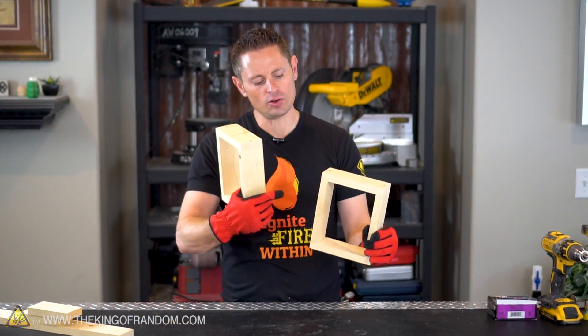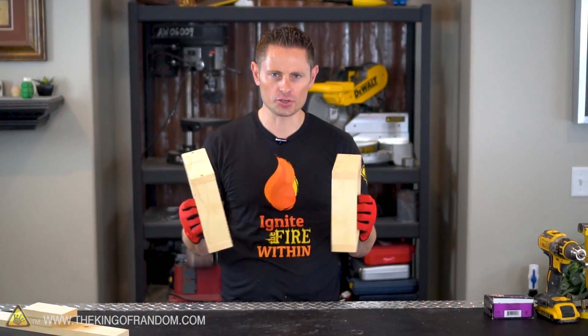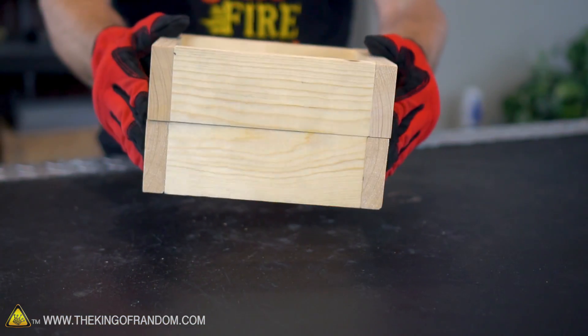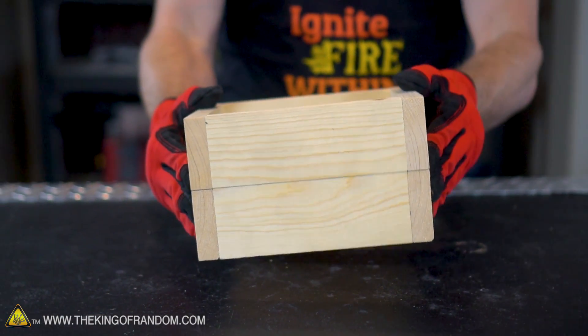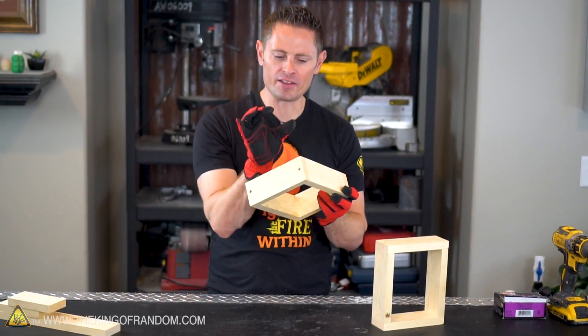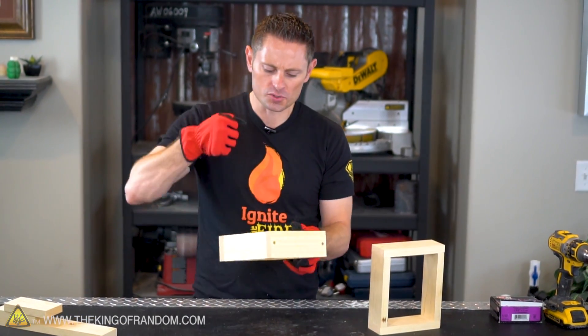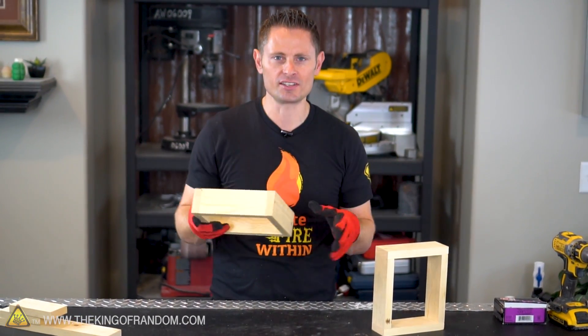So here we are guys. I went ahead and drilled the pilot holes in each of the four corners and added a screw to bind them down tightly, and now we have two nearly identical wooden frames that fit together just about perfectly. Now the purpose of the screws in the corners here is to bind the wooden pieces together tight because once we start ramming sand down in there, it's gonna apply a lot of pressure to the inside walls.